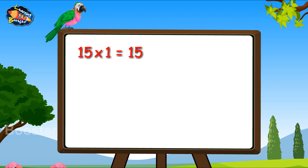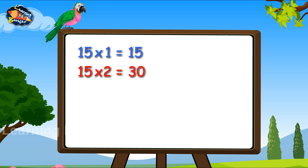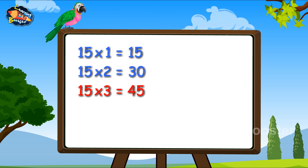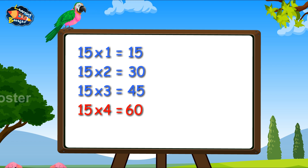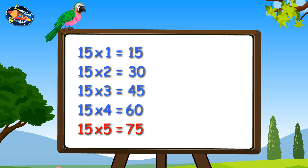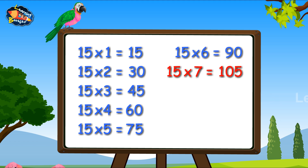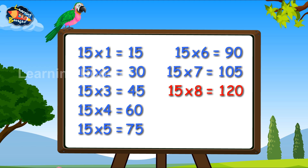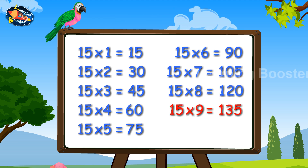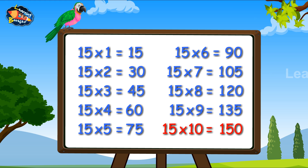Fifteen ones are fifteen. Fifteen twos are thirty. Fifteen threes are forty-five. Fifteen fours are sixty. Fifteen fives are seventy-five. Fifteen sixes are ninety. Fifteen sevens are one hundred and five. Fifteen eights are one hundred and twenty. Fifteen nines are one hundred and thirty-five. Fifteen tens are one hundred and fifty.